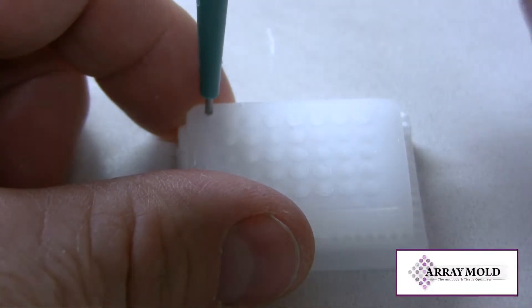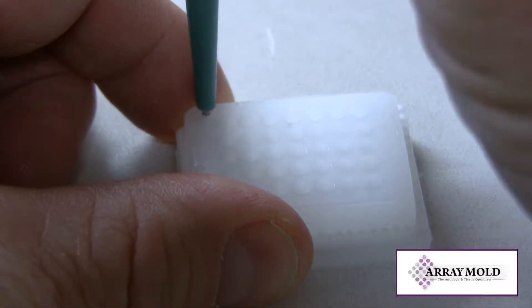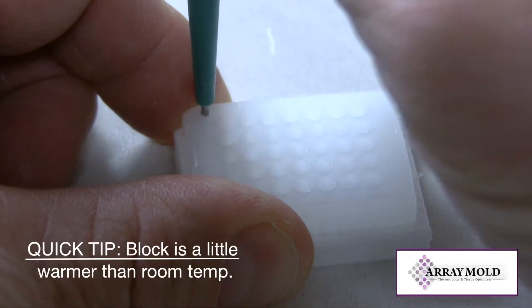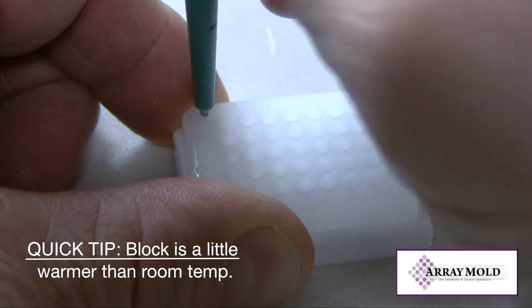Punch the array block with the 1mm needle. The outside diameter of this needle is slightly smaller than the core size of the 1.5mm needle. Try to make the diameter a little bigger as I am doing here so the punch from the 1.5mm needle will fit.